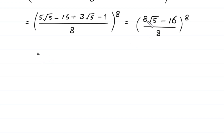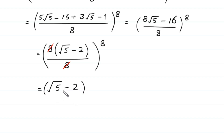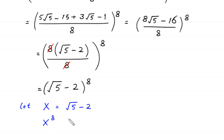We let x = √5 - 2, so x^8 = (√5 - 2)^8. Now from this equation, we move the -2 to the left side: x + 2 = √5. Taking the square of both sides: (x + 2)² = (√5)². Expanding: x² + 4x + 4 = 5. Moving terms: x² = 5 - 4 - 4x, so x² = 1 - 4x. This value of x² = 1 - 4x is important because we will use it next.